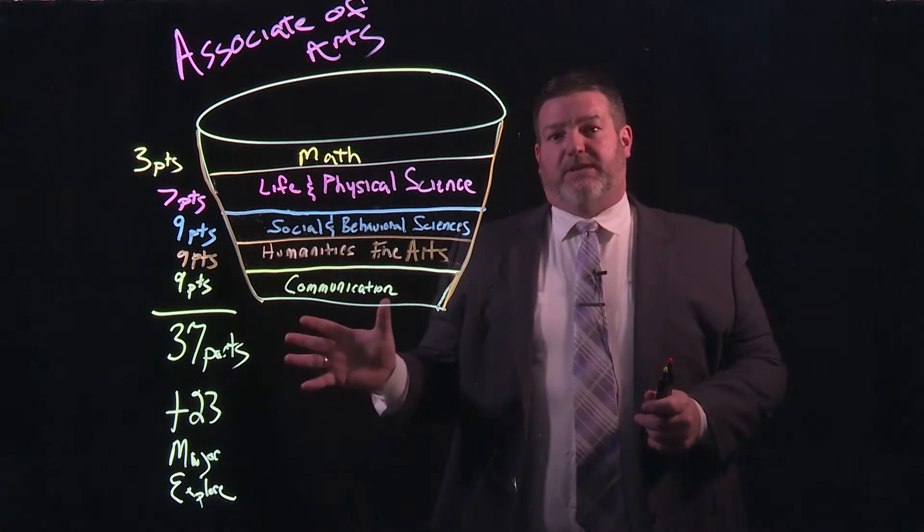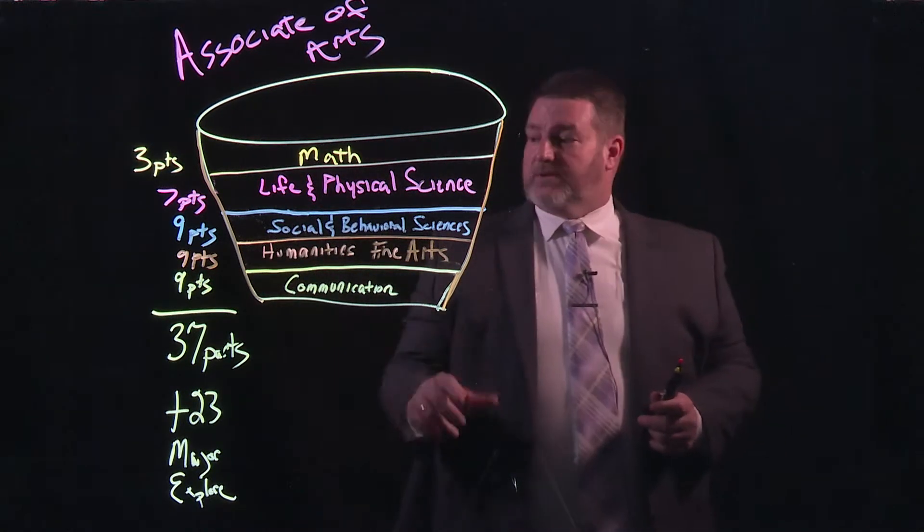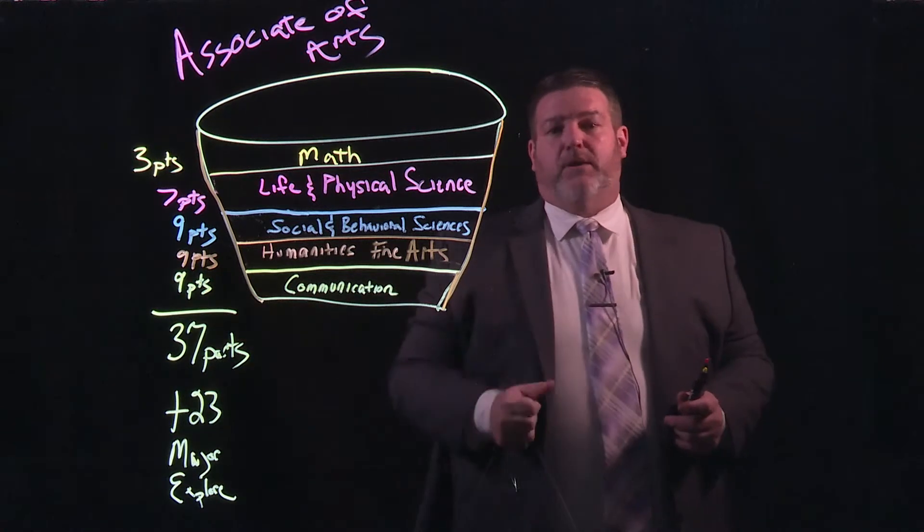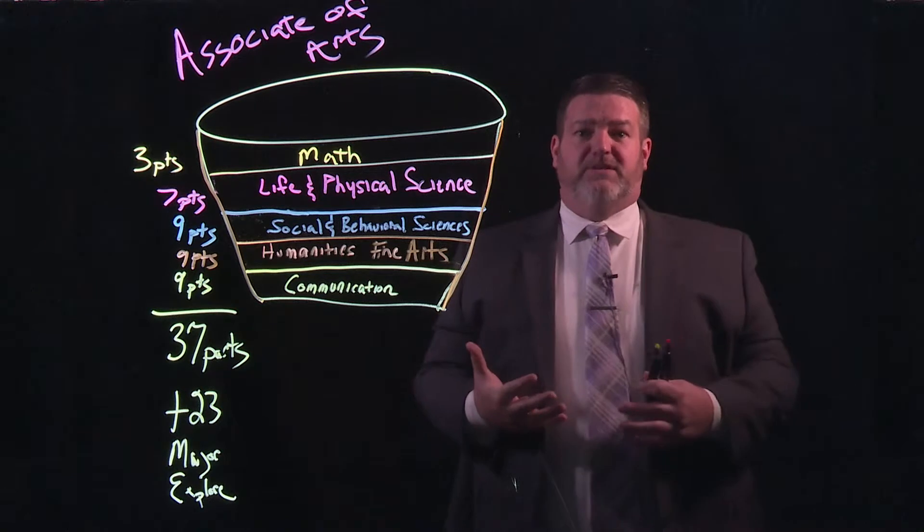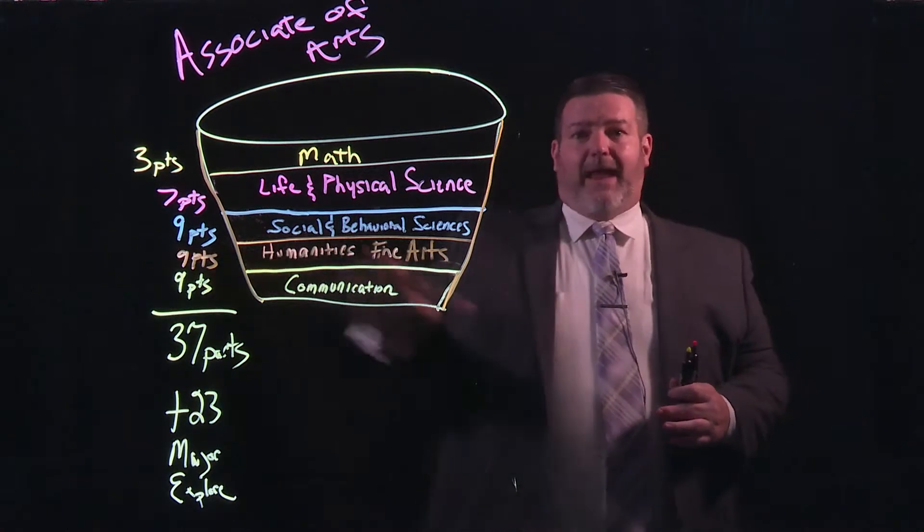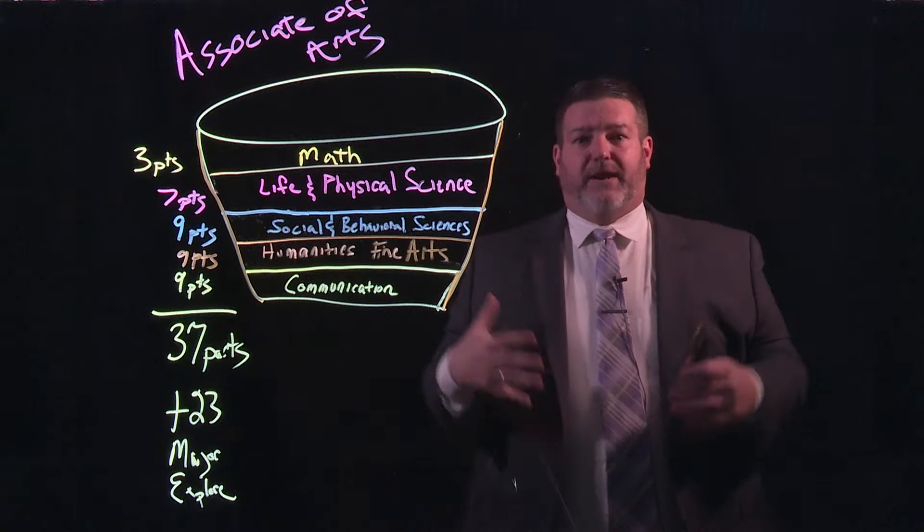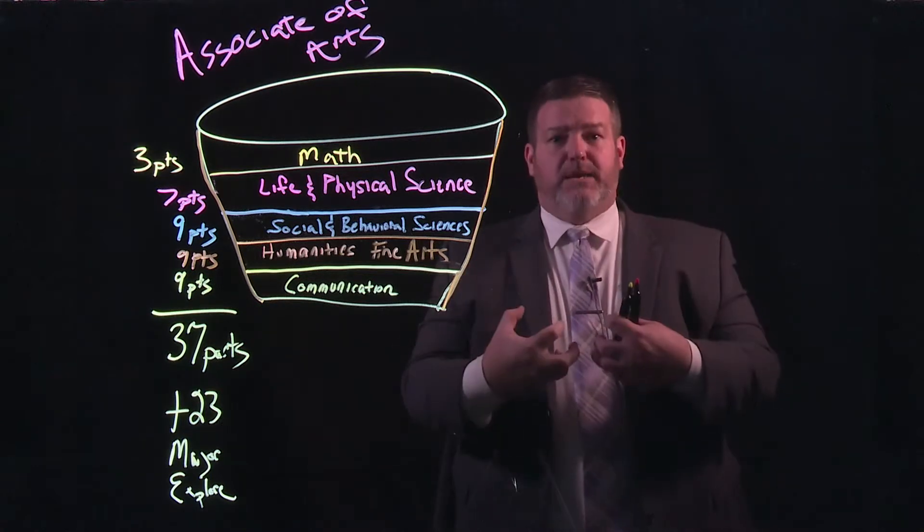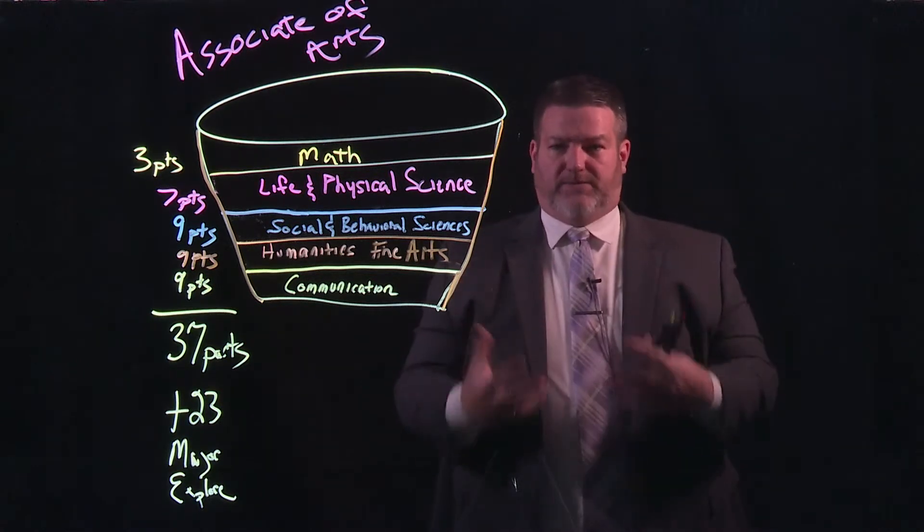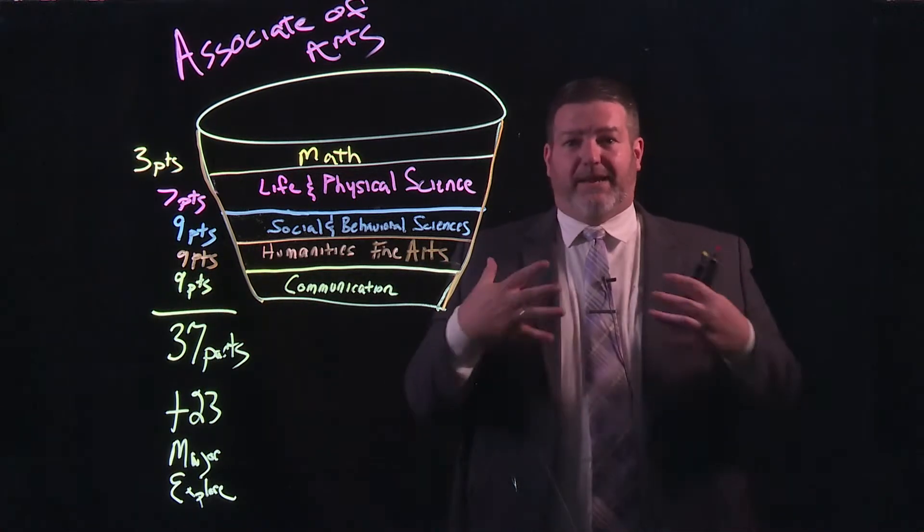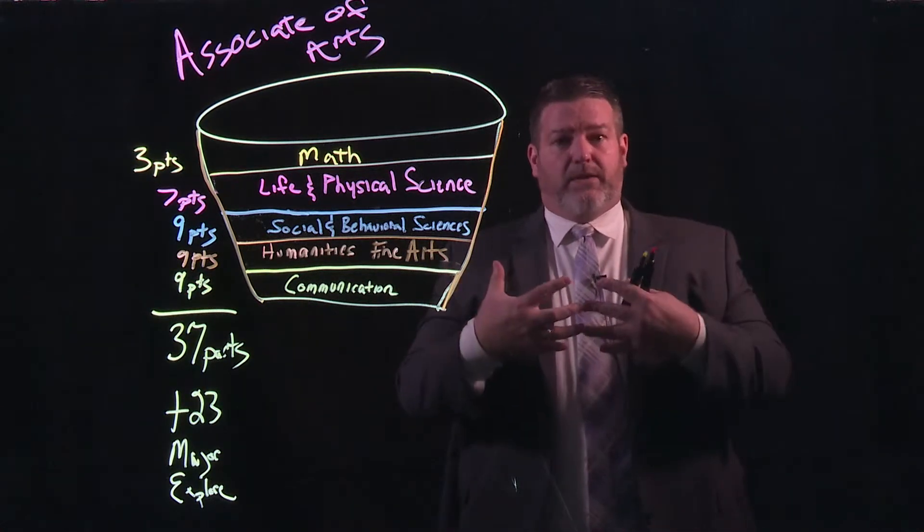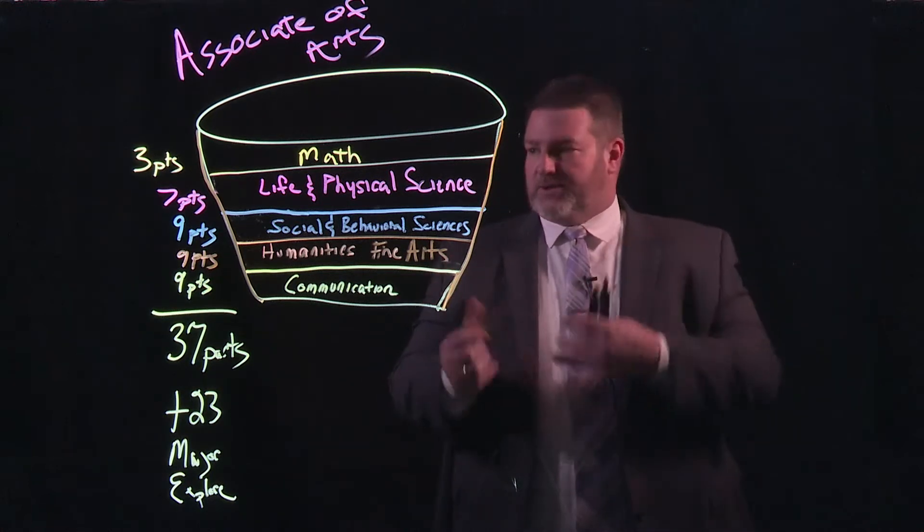Well, let's talk now about the Associate of Arts degree. If I made a recipe for Associate of Arts degree, I'd put nine parts of communication. We're going to reinforce that written and oral communication that the students have been working on their K-12 experience. We're going to add nine equal parts of humanities and fine arts so we can understand what it means to be a human and how we express ourselves as humans. We're going to add nine parts of social and behavioral sciences so we can understand how humans interact with one another and how humans interact in social structures.